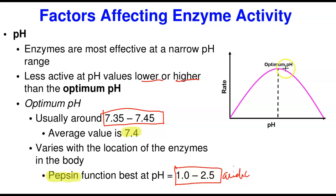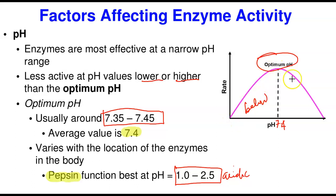At about pH 7.4, you record the maximum activity of most enzymes. Below this, that activity begins to drop, and above this, that activity begins to drop as well. Some enzymes, however, have exceptions — like pepsin, which is part of the gastric juice secreted in an acidic environment. Having said that, we've come to the end of this lecture. Thank you for listening. Bye.